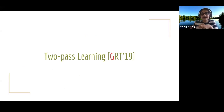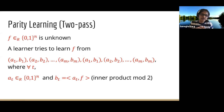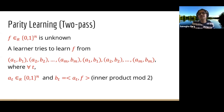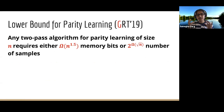For the next 15 minutes I want to talk about a result on two-pass learning from 2019. We still consider the parity learning example: f is a randomly chosen n-bit string, and a learner tries to learn f from a stream of samples of the form (a, b), where a is a randomly chosen n-bit string and b is the inner product of a with f. But now the learner is allowed to go over the stream a second time. The lower bound we prove is that any two-pass algorithm for parity learning of size n requires either n^{1.5} memory bits or 2^{√n} samples.